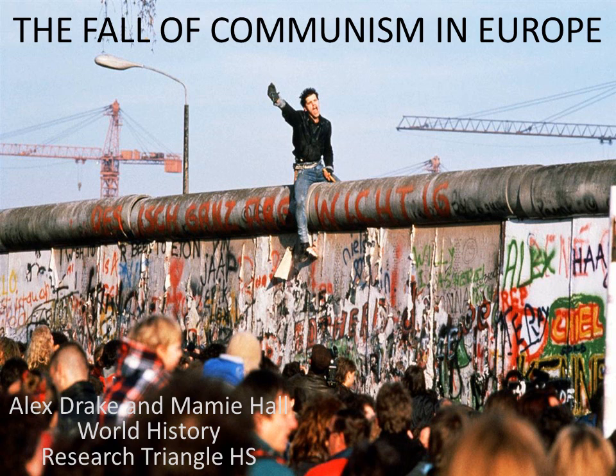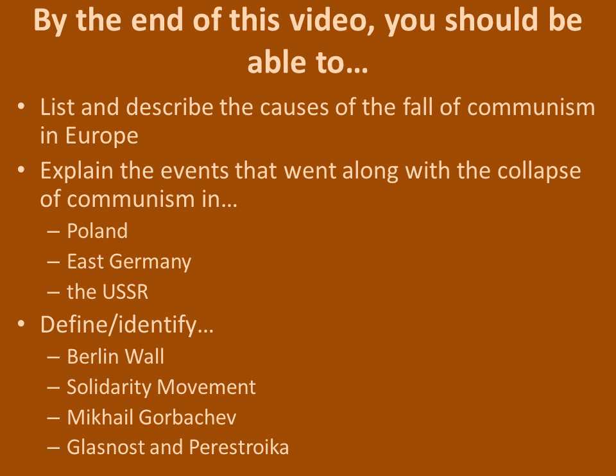Hey there everyone. We're going to wrap up our look at the Cold War by talking about how communism fell apart in Europe in the 1980s and early 1990s. By the end of the video you should be able to say what the causes of the fall of communism in Europe actually were, and explain the events that went along with the collapse of communism, mostly in the Soviet Union, but also in the satellite nations of Poland and East Germany, and we'll talk in very broad terms about some of the other satellite countries and how they transitioned from communism to free market economy in the 80s and 90s.